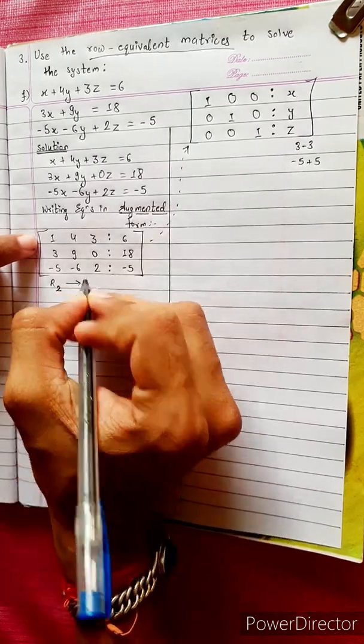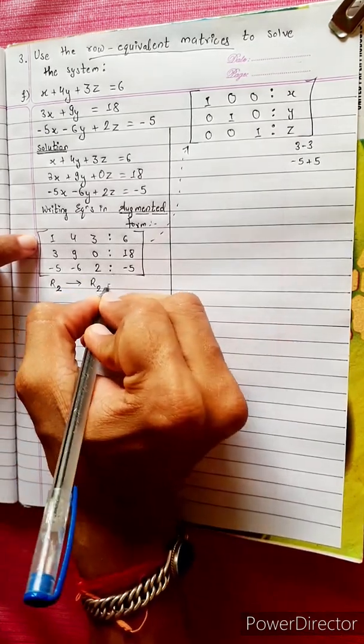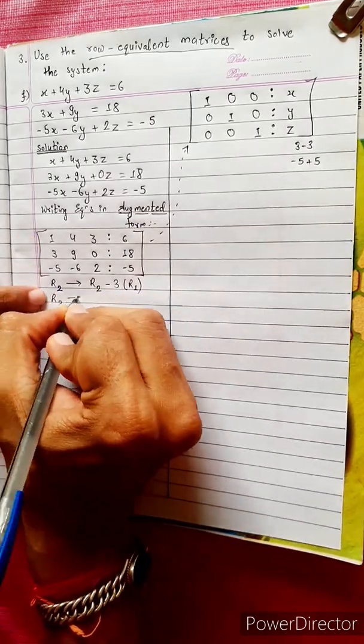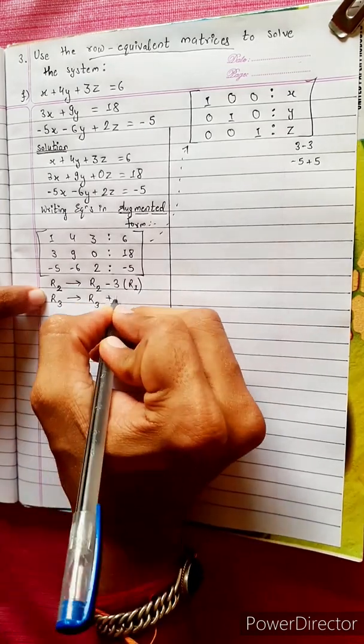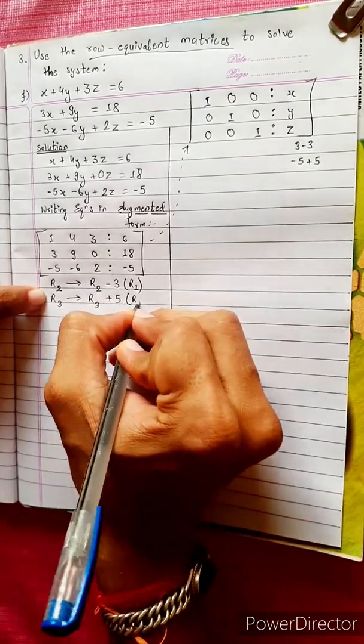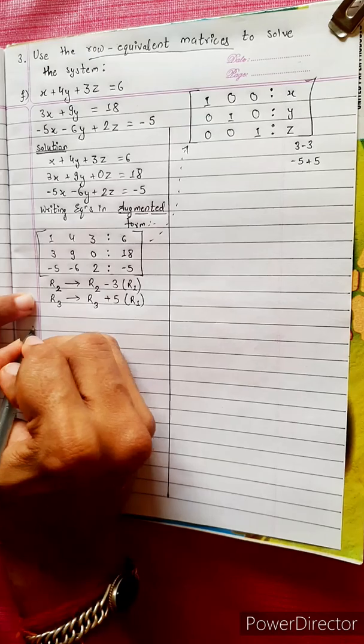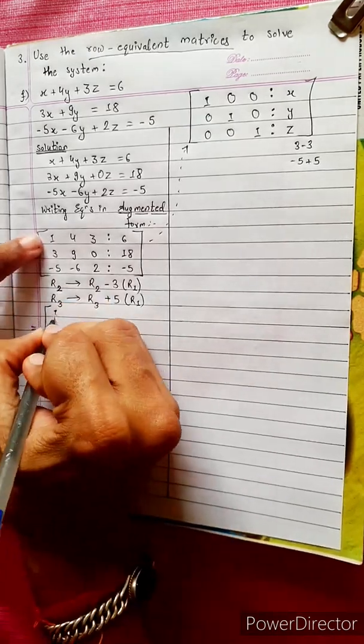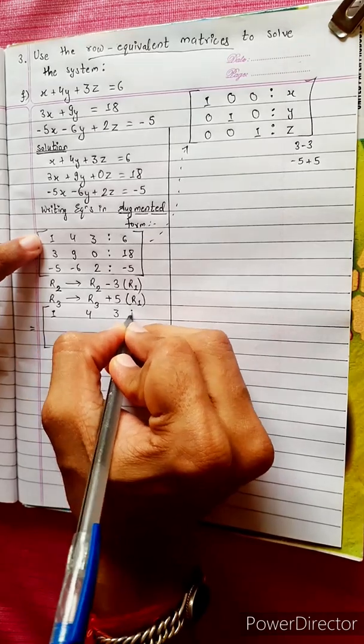Second row R2 changes into R2 minus 3 times R1. Third row R3 changes into R3 plus 5 times R1. Then we have 1, 4, 3 is to 6.